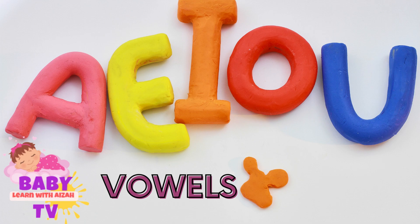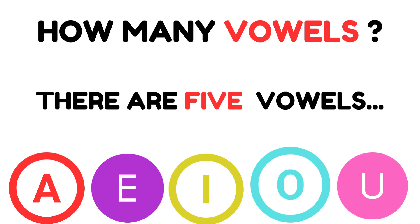Hello kids, welcome to my channel Baby TV. Today we learn about vowels. We will learn what vowels are and how many vowels there are. There are five vowels: A, E, I, O, U. Vowels कितने होते हैं? Vowels होते हैं five.